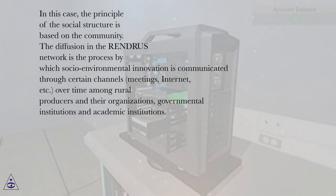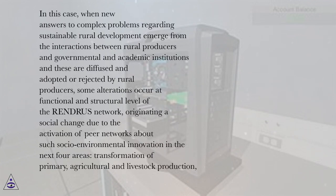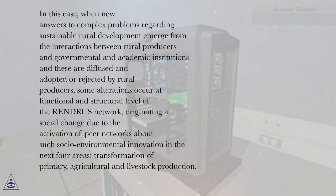The principle of the social structure is based on the community. The diffusion in the Rindris network is the process by which socio-environmental innovation is communicated through certain channels — meetings, internet, etc. — over time among rural producers and their organizations, governmental institutions, and academic institutions. When new answers to complex problems regarding sustainable rural development emerge and are diffused, adopted, or rejected by rural producers, some alterations occur at the functional and structural level of the Rindris network, originating social change in four areas: transformation of primary agricultural and livestock production, rural industry and marketing, rural non-agricultural services and handicrafts, and rural extension.